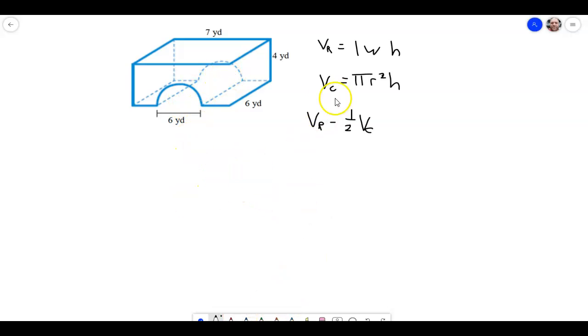All right, so let's take the volume of the rectangular prism. So the volume is going to be equal to length times width times height. So that is going to be all the way across is 7 times, looks like we have a 4 there, times 6.